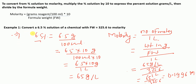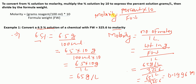So to convert percent solution to molarity, you just multiply the percent by 10 and divide by the formula weight. The formula is: molarity = (percent × 10) ÷ formula weight. So 6.5 times 10 divided by 325.6 equals 0.1996 molar.